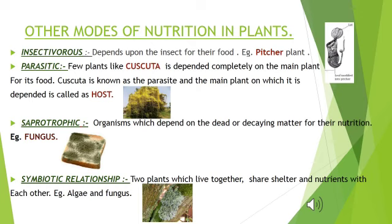Next are parasitic plants. In parasitic nutrition there are two types: the host and the parasite. The plant which is dependent upon another plant for nourishment is called the parasite, and the plant on which it depends is called the host. For example, Cascuta — this is a fungus-like organism which, as you can see in the picture, appears as a yellow structure over a large tree. The main tree is the host and Cascuta is the parasite. Since it cannot make its own food because it lacks chlorophyll, it takes ready-made food from the host plant it is climbing on.